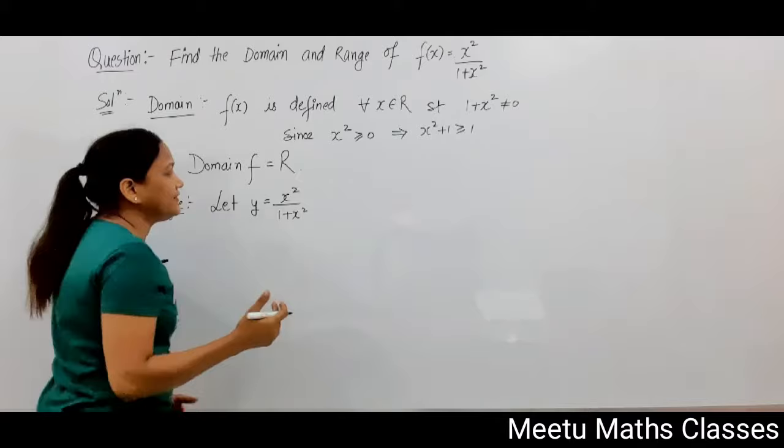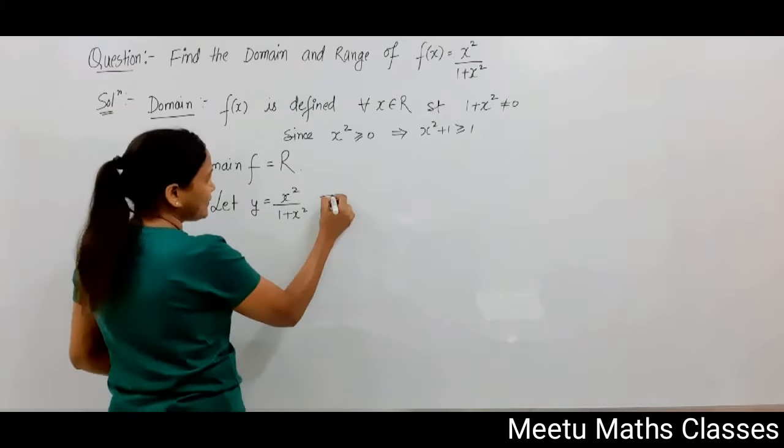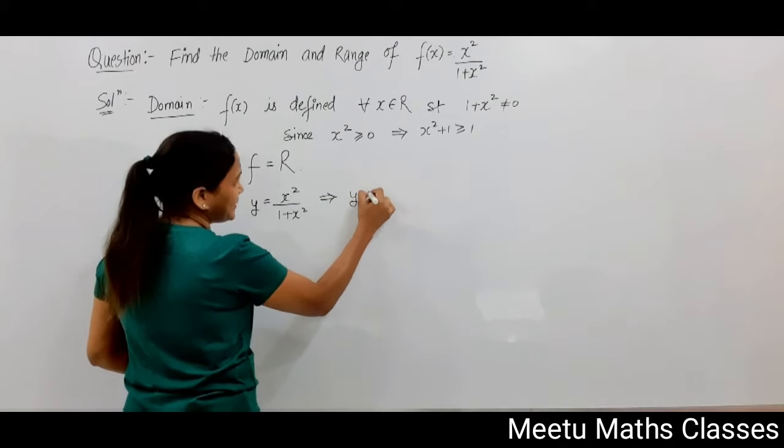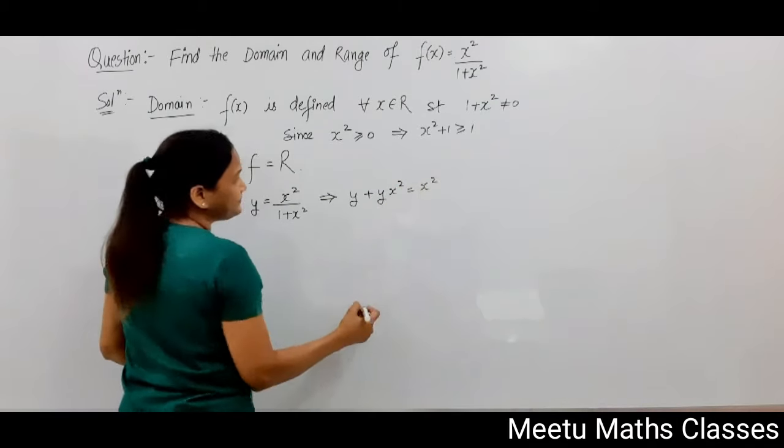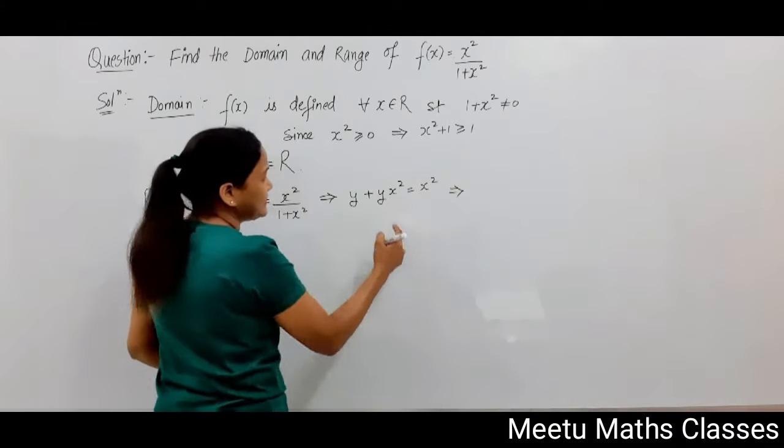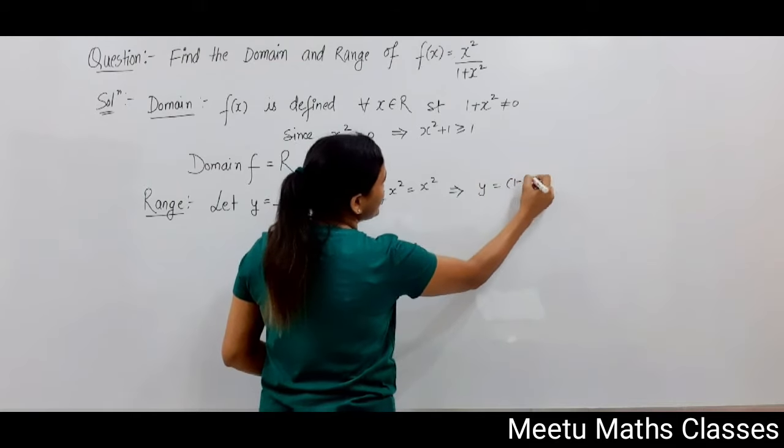So we are going to convert our function in the form where x is a function of y. By cross-multiplying, y + yx² = x², and that implies y = (1 - y)x².